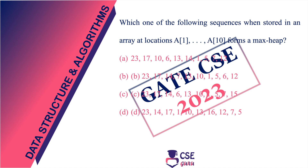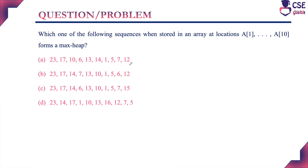Welcome to CSE Guru. In this session, we will discuss a GATE problem in DSA. The problem is raised in GATE CSE 2023: which one of the following sequences, when stored in an array at locations A1 to A10, forms a max heap? They have given four options.